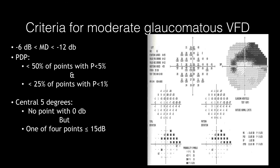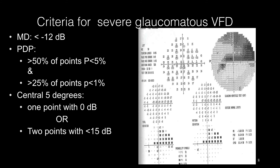The central five degrees points refer to those four points in the central part of the numeric map. In the moderate stage, the mean deviation is between minus six and minus twelve dB. In the pattern deviation plot, less than 50 percent of points have a p-value less than five percent, less than 25 percent have a p-value less than one percent, and in the central five degrees no point has a threshold value of zero, though one of the four points may have a threshold value below 15 dB.